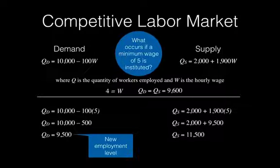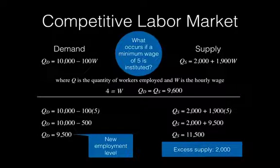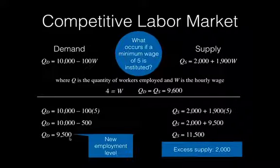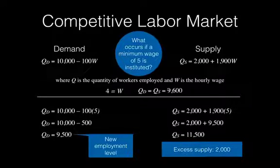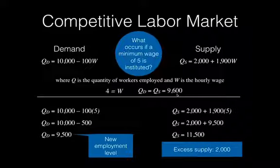The 9,500 is the new employment level — this is what is demanded by companies hiring individuals at that wage rate. We have an excess supply of 2,000 because QS is greater than QD; excess supply equals QS minus QD. Originally the employment level was 9,600, and now it's 9,500, so 100 people ended up getting laid off because of the institution of this minimum wage.